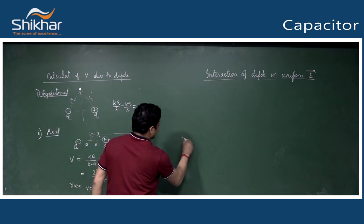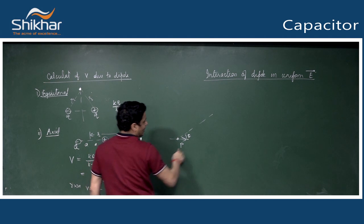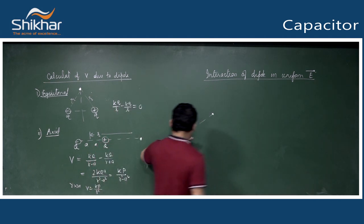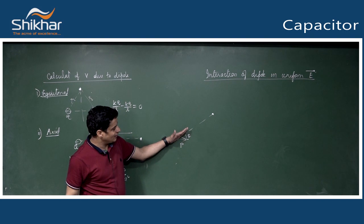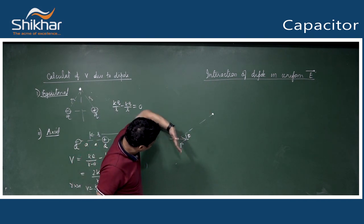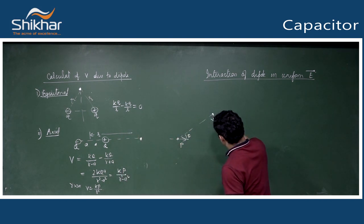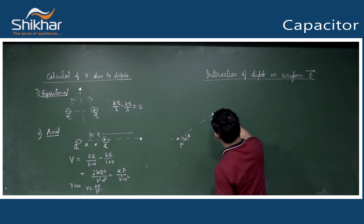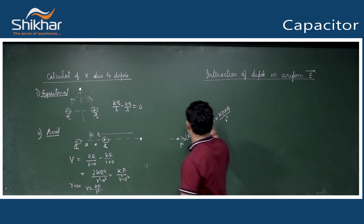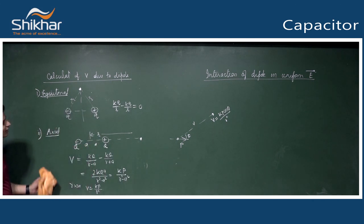In the general case, at any point, we can decompose the dipole into components p cosθ and p sinθ. The p sinθ component contributes zero potential (equatorial), while p cosθ gives potential kp cosθ/r². For large r, potential is kp cosθ/r². This completes potential calculation.